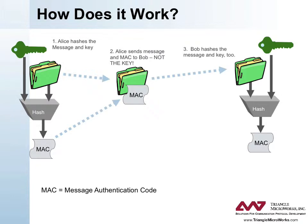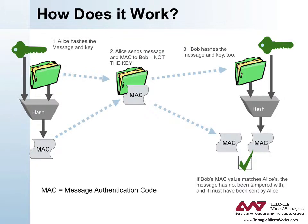Bob receives the message. Since he already has a copy of the key, he can duplicate Alice's calculation — he hashes the message and the key together to produce a MAC. If Bob's MAC value matches the value that Alice transmitted with the message, he knows two things. First, the message has not been tampered with. If an attacker had tampered with the message, Bob's calculation would have been on a different message than Alice used, and therefore the MAC would have been different. The MAC calculation is carefully designed so that without knowing the key, an attacker could not modify the message in such a way that would produce the correct MAC. Secondly, Bob knows that the message came from Alice, or at least someone who knew the pre-shared key. Although the key was not transmitted on the link, it was intrinsic to the calculation, and without it, an attacker could not produce a matching MAC.